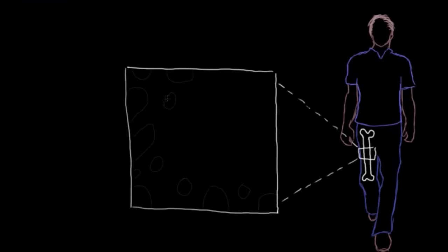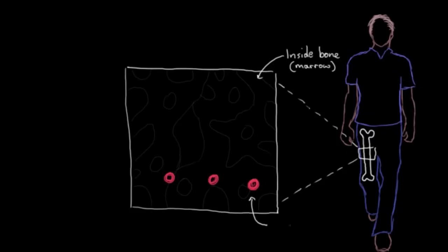But let me show you another example here of a multipotent stem cell. Let's look at this guy's femur, his thigh bone, which is where our blood cells are made, inside bone marrow in our bones. So you might know that our red blood cells have a lifespan of about four months.